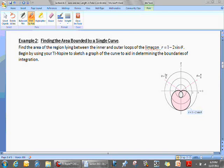In the example that we're going to do here, example two, we're actually going to be finding the area of the region lying between the inner and outer loops of the limacon defined by r equals 1 minus 2 times the sine of theta.